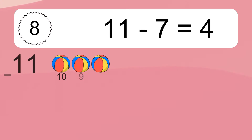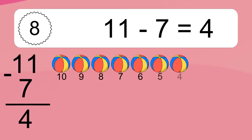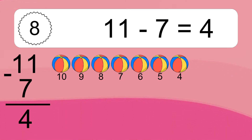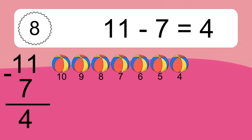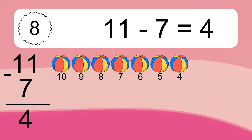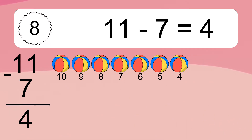11 minus 7 equals what? 11 minus 7 equals 4. Let's count it: 10, 9, 8, 7, 6, 5, 4.